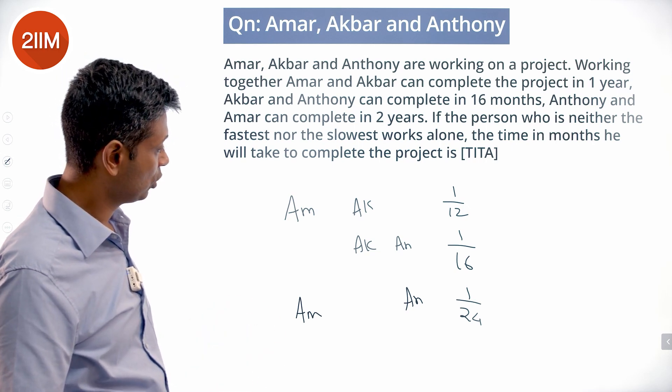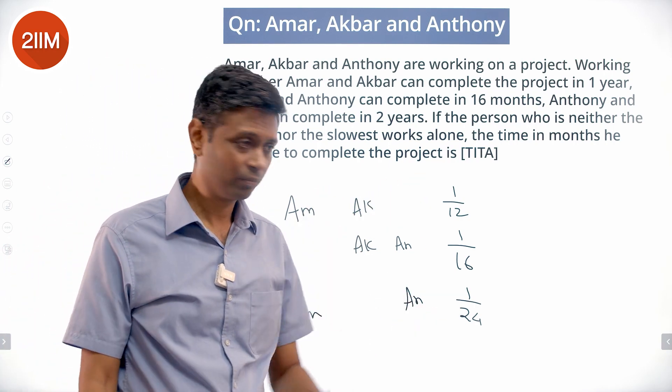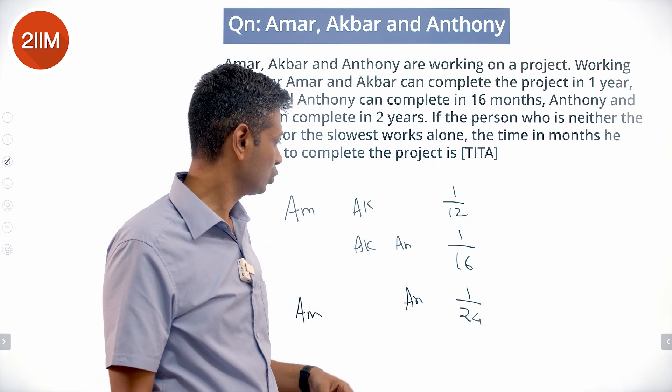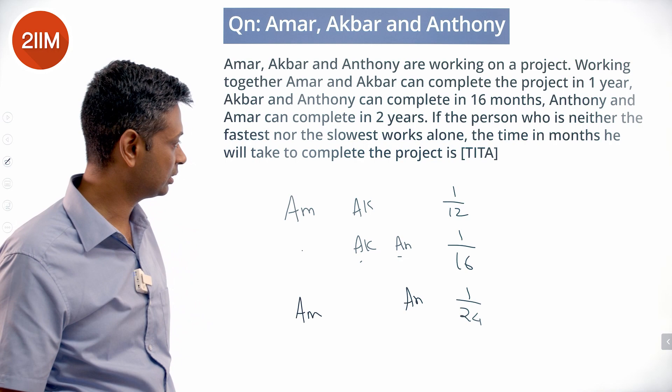The person who's neither the fastest nor the slowest works alone - we need to find the time in months. 1/12 and 1/24 are the two extremes, 1/16 is the middle number. So we're looking at Amar's speed, and Amar is neither the fastest nor the slowest.